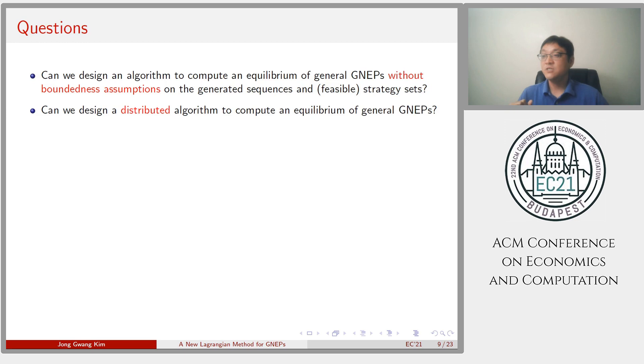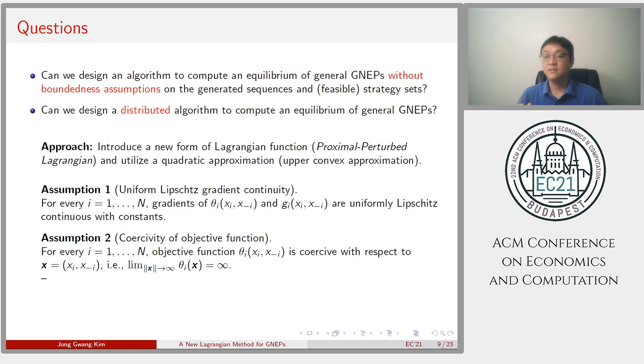In the work, I seek to answer two questions. First, can we design an algorithm to compute an equilibrium of general GNEP without boundedness assumptions on the generated sequences and the feasible strategy set? Second, can we design a distributed algorithm to compute an equilibrium of GNEP?